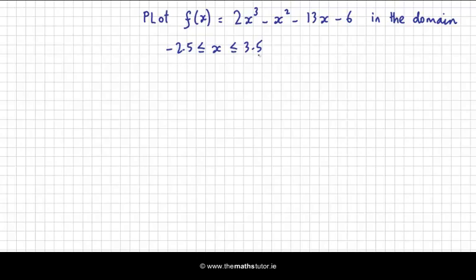If our domain is like this, we would be expected to substitute in values such as -2.5, -2, -1.5. This would be very awkward to do because we have to cube it and square it and so on. So I'm going to show you how to use a Casio calculator and a particular function known as the table function.